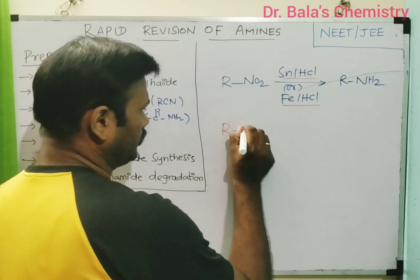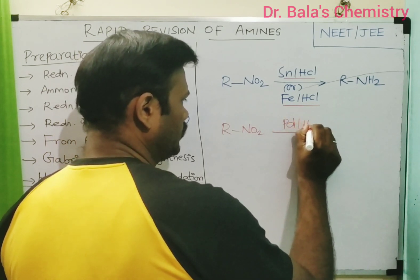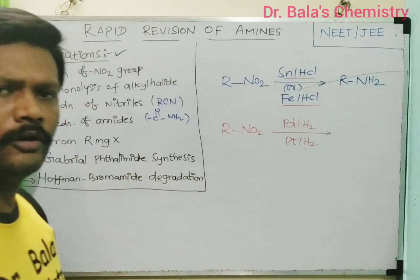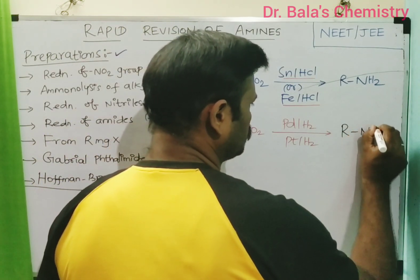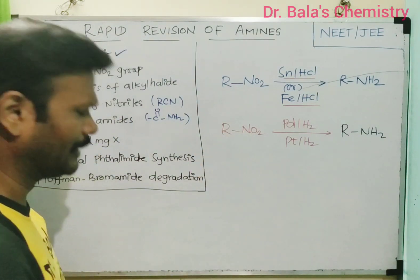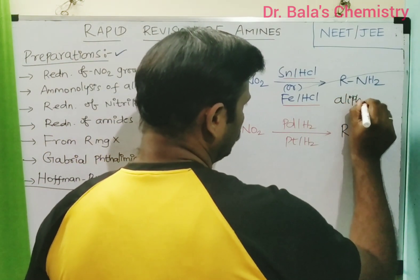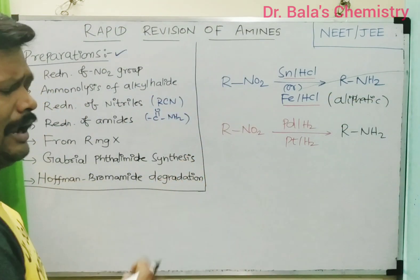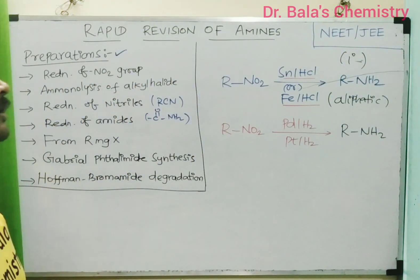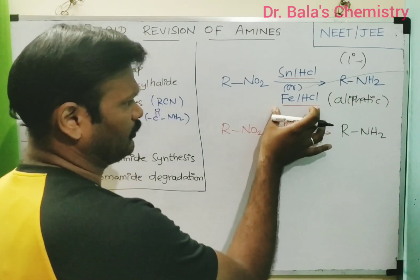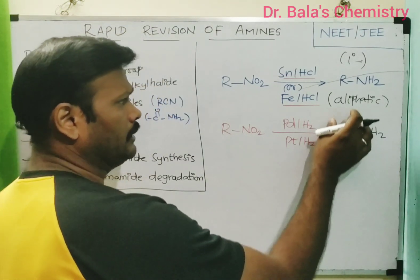The second method is catalytic reduction. R-NO2 is reduced using either palladium/hydrogen (Pd/H2) or platinum/hydrogen (Pt/H2) to give amines. There are two methods: catalytic reduction is generally used for aliphatic amines, while chemical reduction using iron/HCl is better suited for aromatic amines.